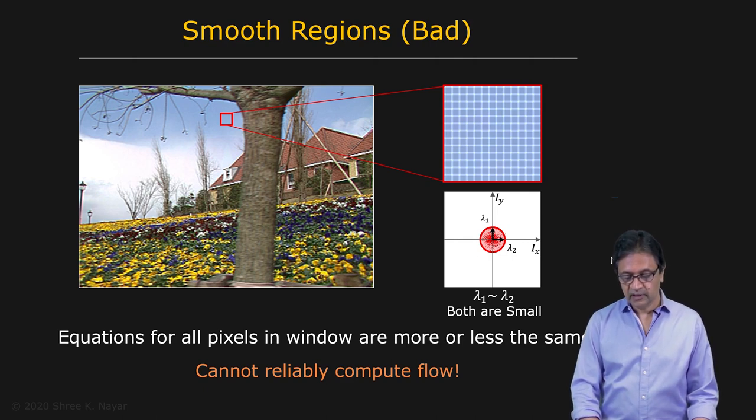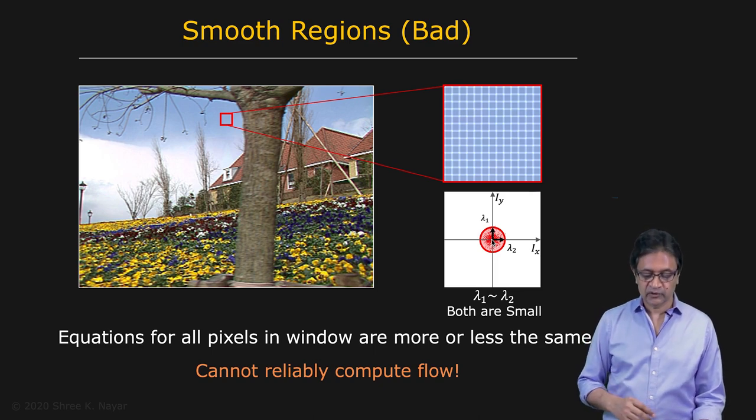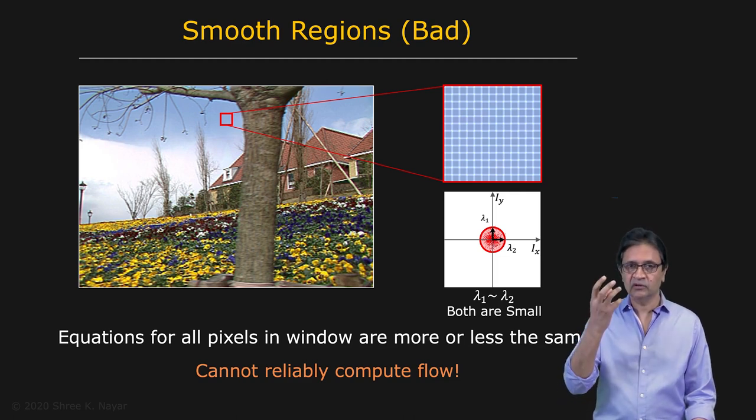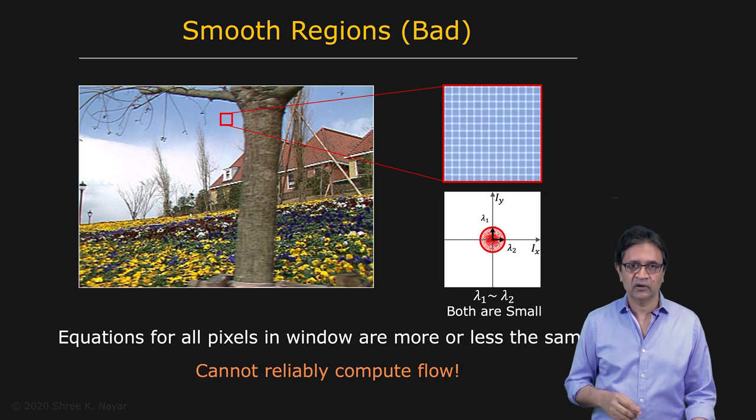So if lambda one and lambda two are really small, which is the way it's turning out in this case because all the gradients are very small, then you're not going to be able to compute optical flow reliably. This should not surprise you. When you have no texture to hang on to, your derivatives are all small. Clearly, estimating optical flow is going to be very difficult.